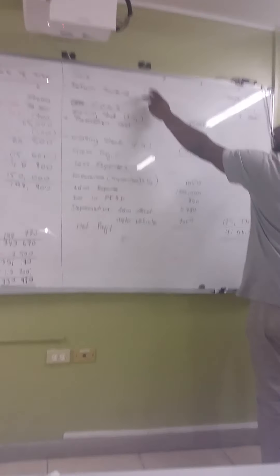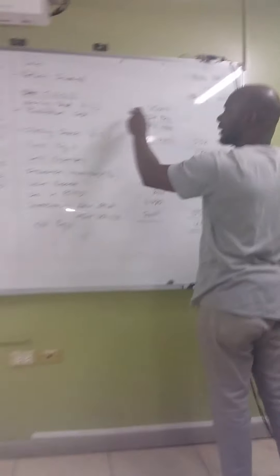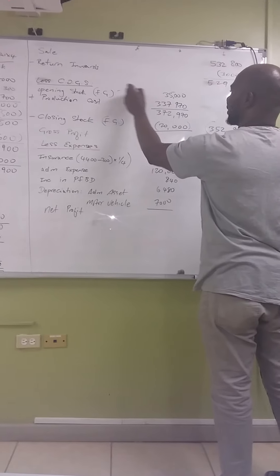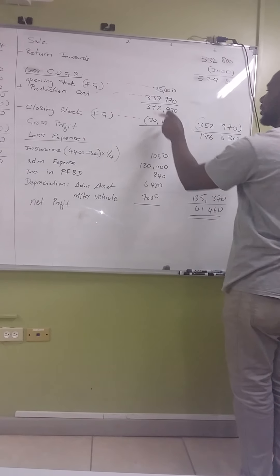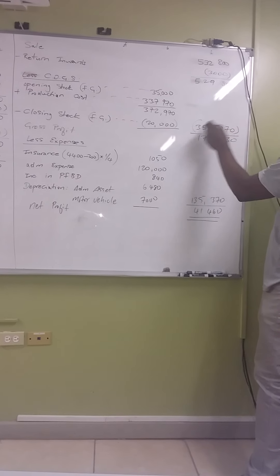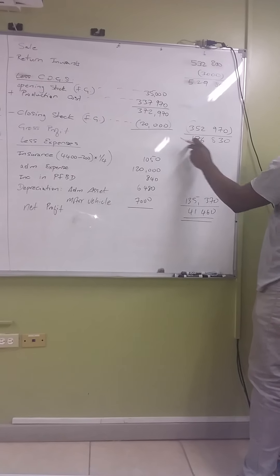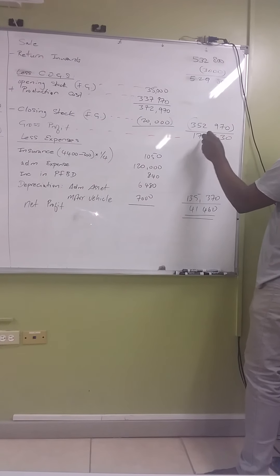Now taking it to the income statement: start with sales, minus returns inwards to get net sales of 529,800. Add opening stock of finished goods, add production cost, then subtract closing stock of finished goods. Cost of goods sold is 352,970. Net sales minus cost of goods sold gives a gross profit of 176,830.